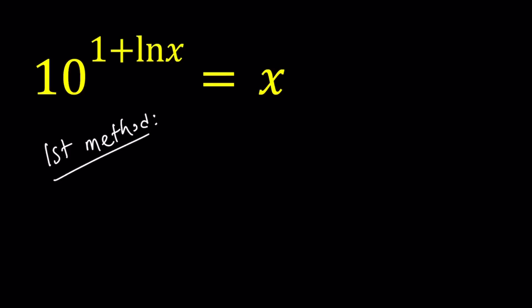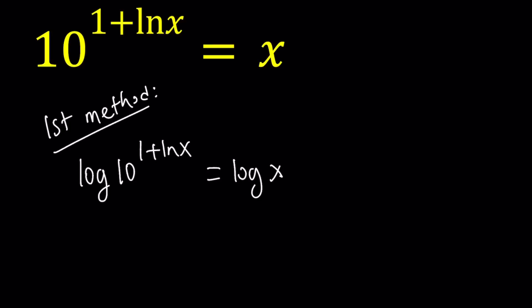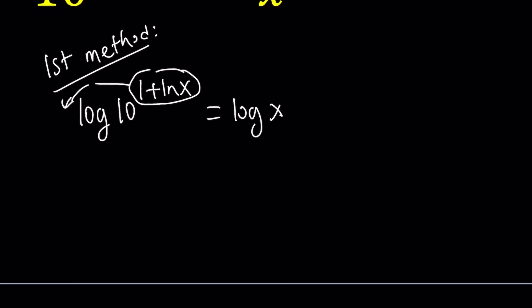For my first method, I'm going to log both sides. Since we have 10 as our base on the left-hand side, it makes sense to log both sides and then bring this down. If you bring that down, that's going to be 1 plus ln x multiplied by log 10, which is 1.